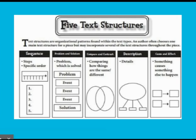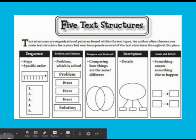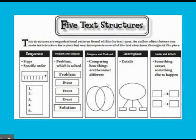Then we have the problem/solution, where we start with a problem and then that causes an event and another event and another event, and then you end up in a solution. You can also have one where you're comparing how things are the same or how they're different — that might mean a chapter from one character's point of view and then another from a different character's, where you see similarities and differences. There's also description, where there's one thing and then you're given details about it. And there's cause and effect, where something causes something else to happen, with multiple causes, versus problem/solution, where you have one major problem.